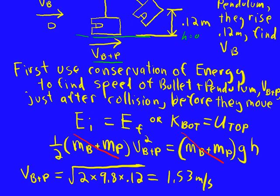We get one-half the total mass times our combined velocity squared equals mgh, the potential at the top. The masses cancel, and we find that the bullet and pendulum are going 1.53 meters per second just after the collision.